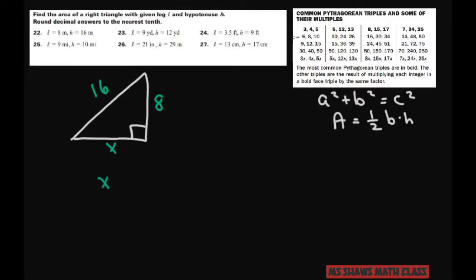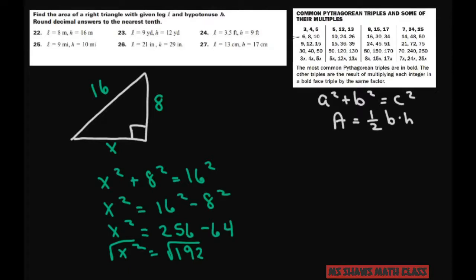So we know our area is base times height, so we have to find the x. So we're going to do x² + 8² = 16². So x² equals 16² minus 8². So that's going to give you 16² is 256 minus 64. So x² is going to equal 192. Take the positive square root, and that's going to be 192 gives you x equals 13.856. So I'll just put 13.86 because we're just going to estimate anyway.